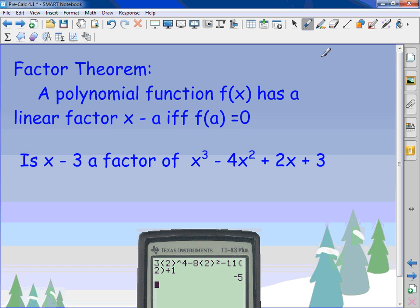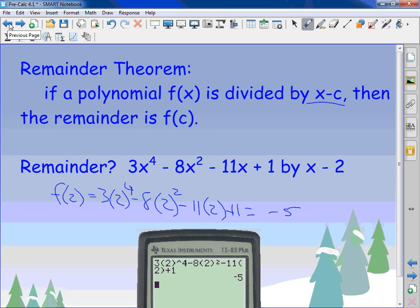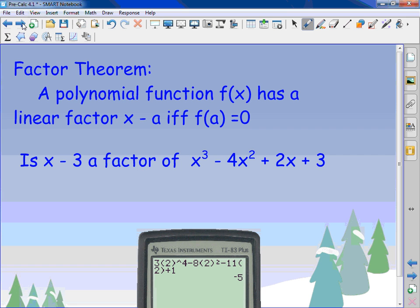Factor theorem. A polynomial function, f of x, has a linear function, x minus a, or a linear factor, x minus a. That's not a typo. If and only if f of a is zero. This is branching off what I was just saying. This tells me I have a remainder. If I have a remainder, it's not a factor. If there's no remainder, it means I have a factor. So if f of c is zero, then it's a factor.